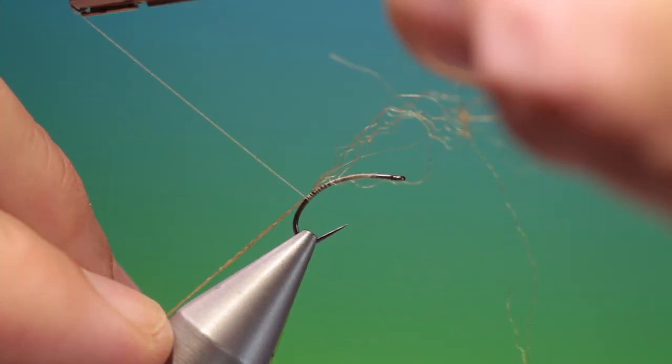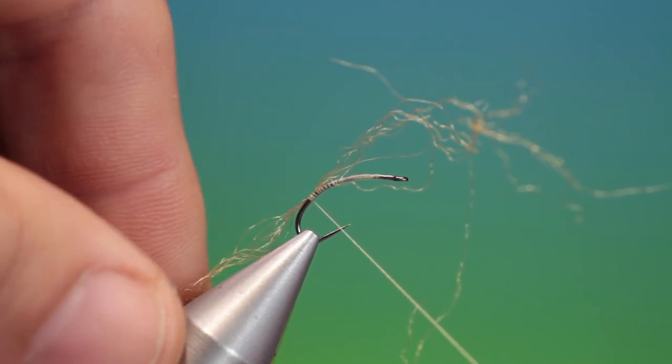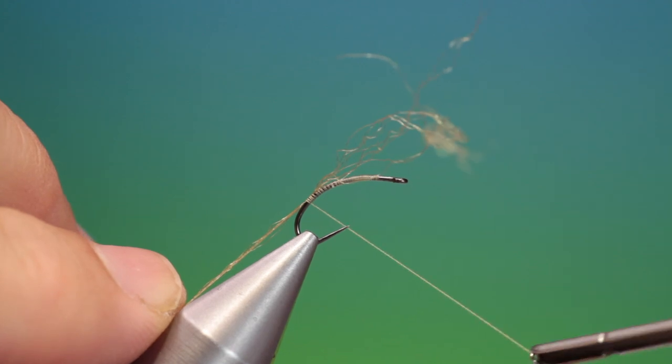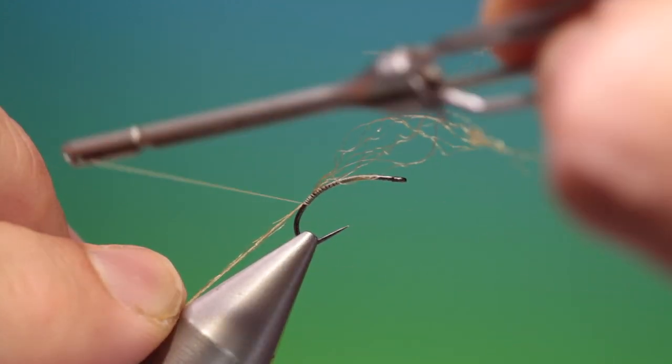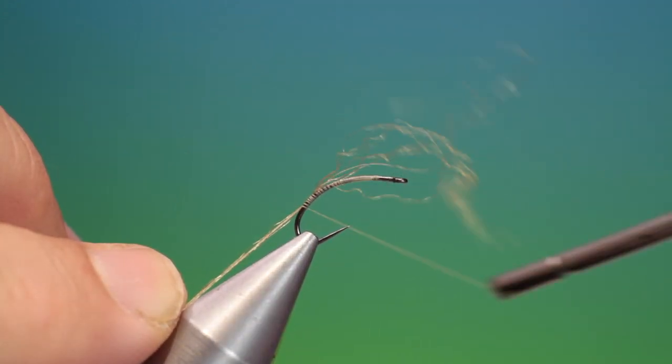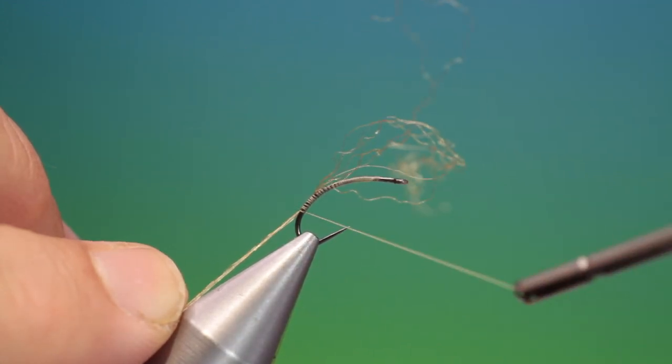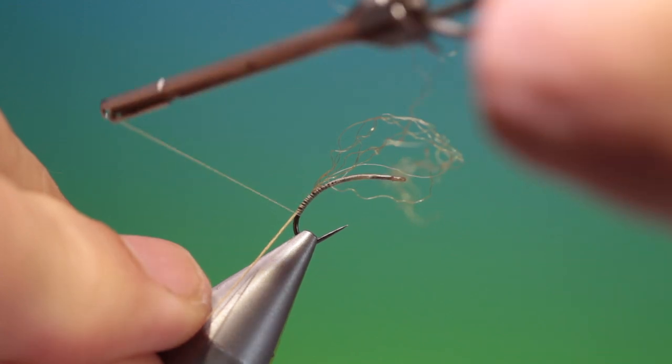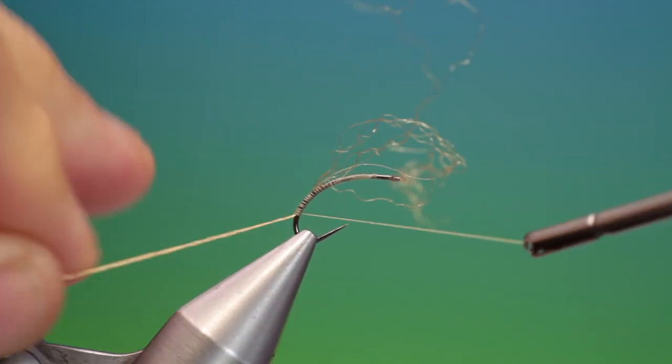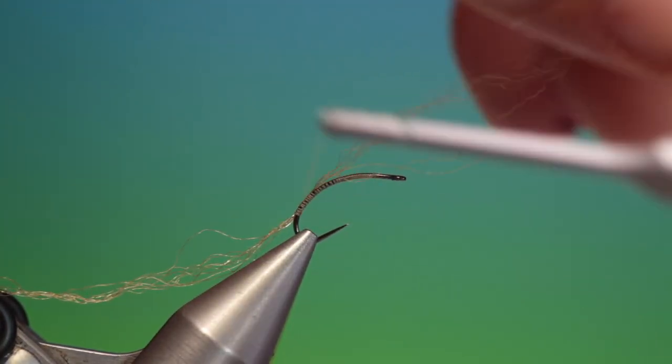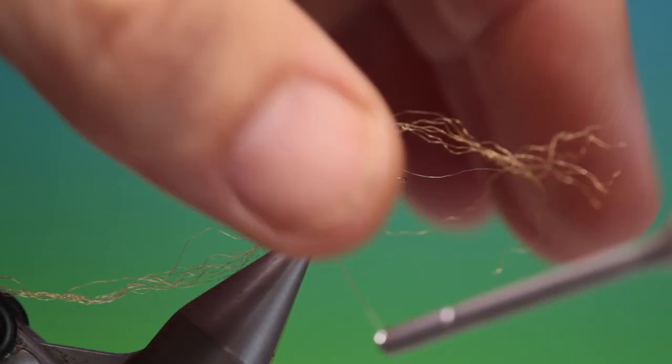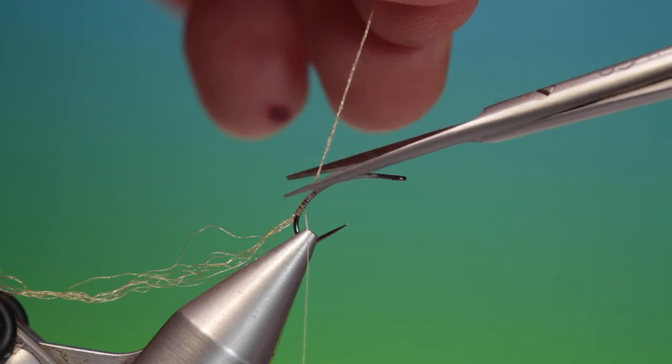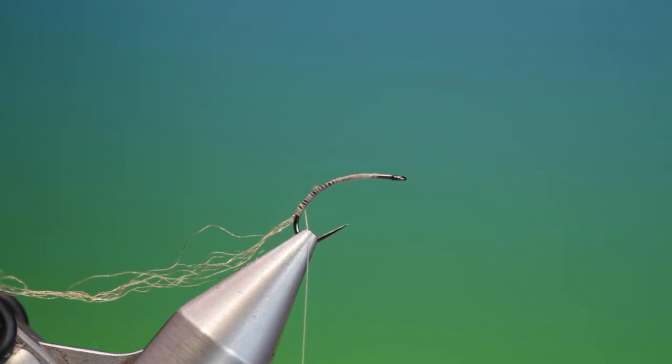And go down, keep it on top of the hook shank and we go down right into the bend. We want to use the full curve of this merger hook. And then we can stop there, we can remove the surplus from there.